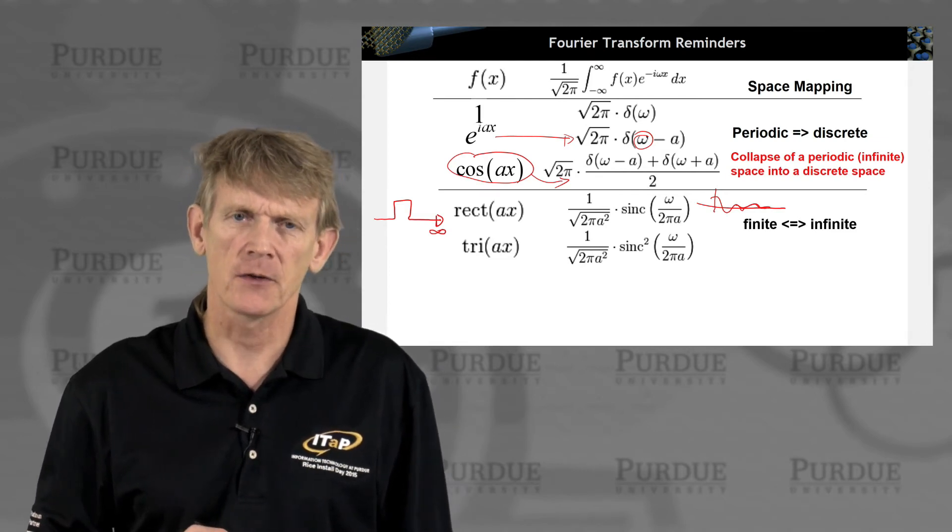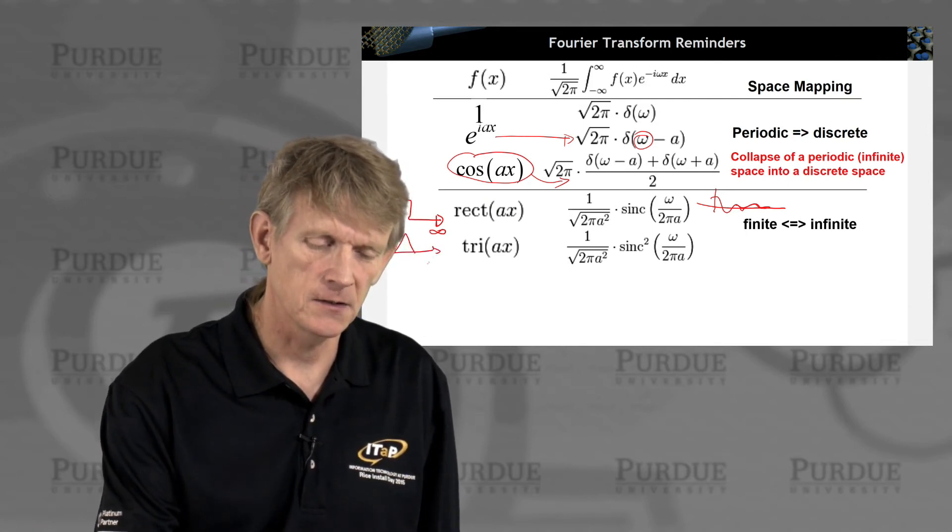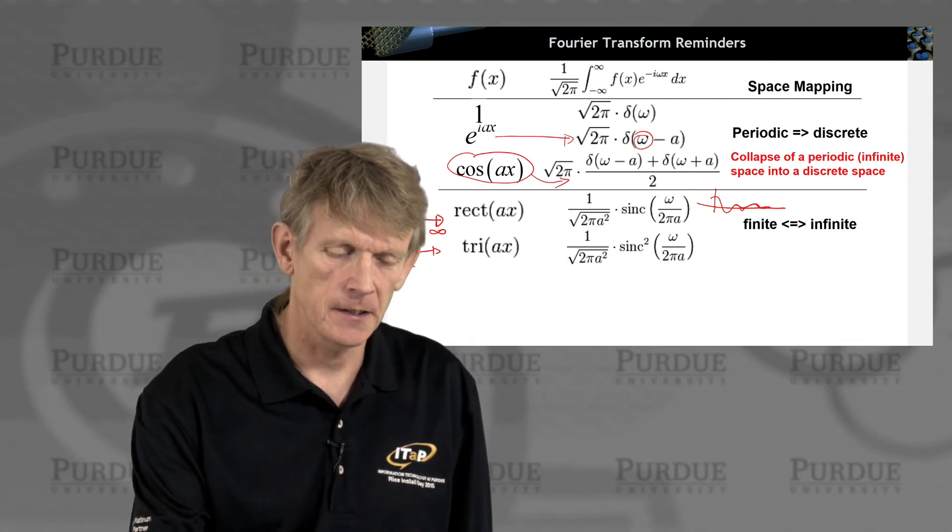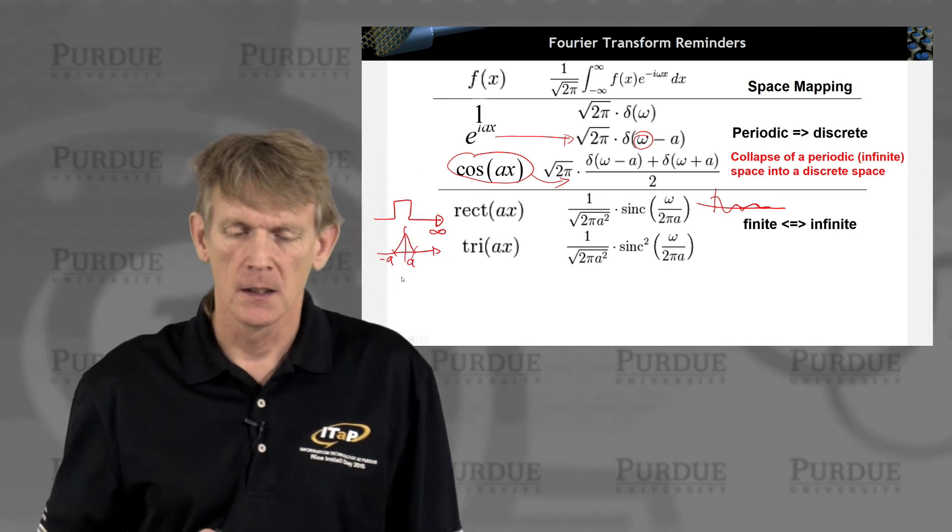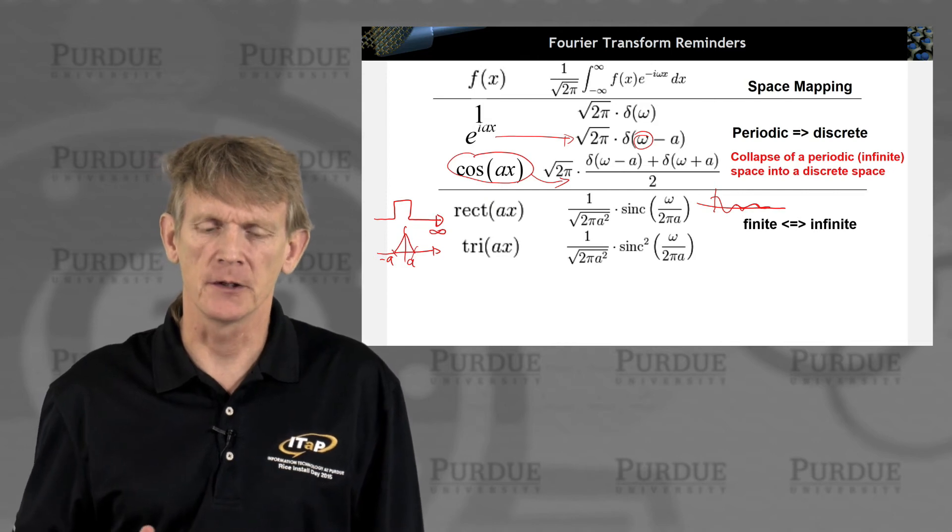A triangular function, like this, also finite in space, where this might be the intersect a and a minus a, like so. Maps into the square sinc function, and again you go from finite to infinite.